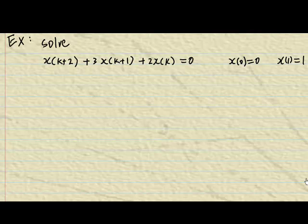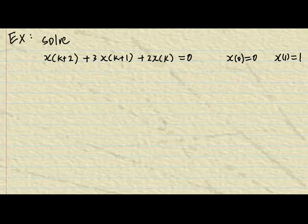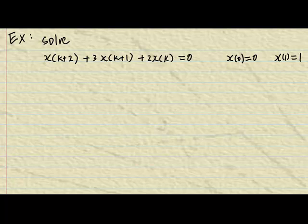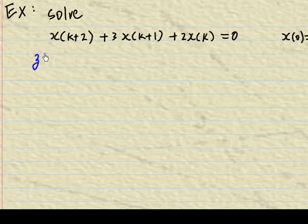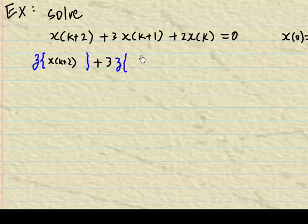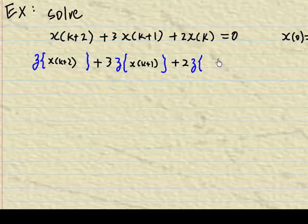This recording will show you how to solve a difference equation by using a Z-transform. We are given the difference equation x(k+2) + 3x(k+1) + 2x(k) = 0. To solve this difference equation by Z-transform, you must take the Z-transform of each term: the Z-transform of x(k+2), plus 3 times the Z-transform of x(k+1), plus 2 times the Z-transform of x(k), and the right-hand side is 0.